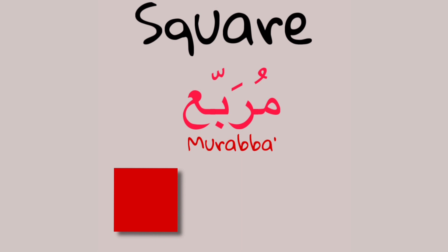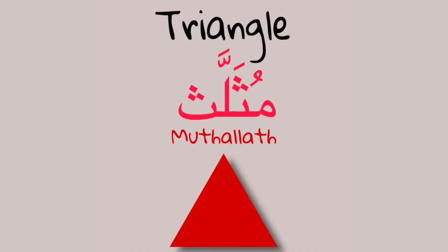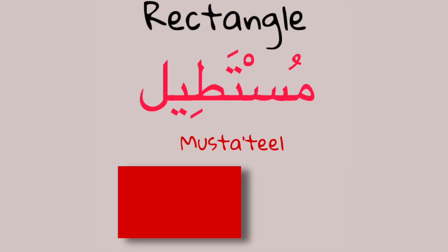مُرَبَّع. Triangle — مُثَلَّث. Rectangle — مُستَطِيل. مُستَطِيل.